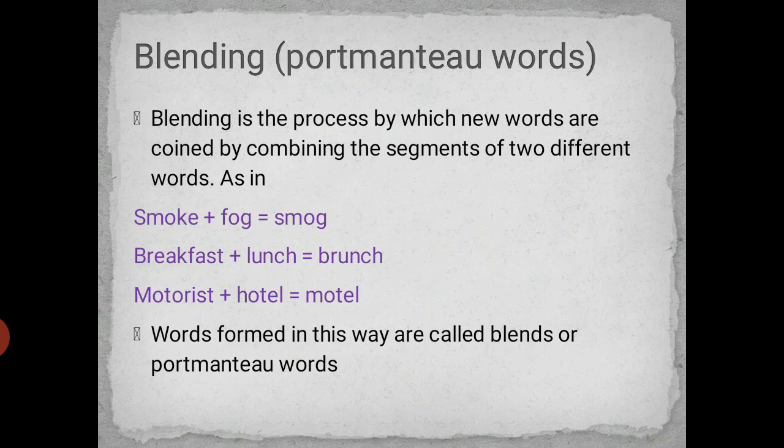The next method is blending — a process by which new words are coined by combining segments of two different words. For example: smoke plus fog gives smog; breakfast plus lunch gives brunch; motorist plus hotel gives motel. Words formed in this way are called blends or portmanteau words.